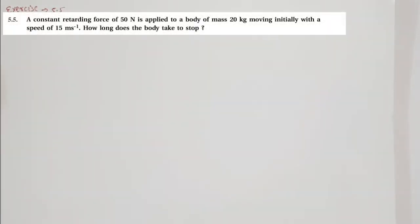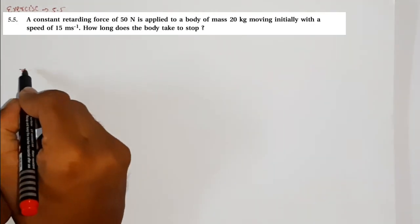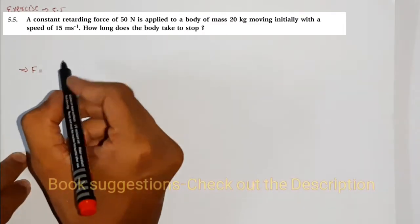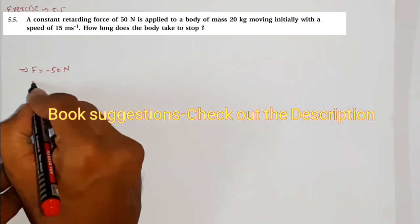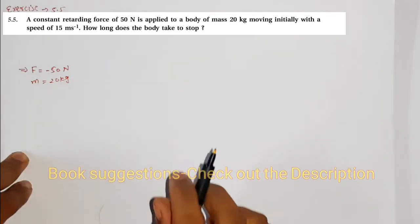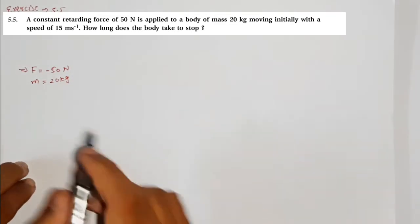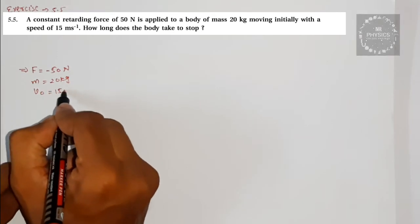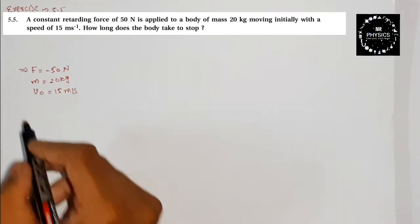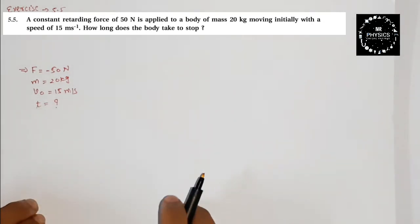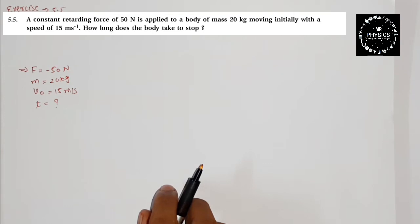Hello students, Chapter 5, Exercise 5.5 example. A constant retarding force F — retarding means minus — so F is minus 50 Newton, is applied to a body of mass m equal to 20 kg, moving initially with a speed v₀ of 15 meters per second. How long does the body take to stop? That means they are asking about time — time is the question mark.